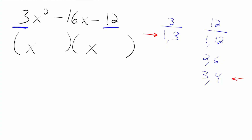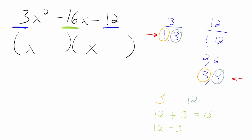The next phase is pretty simple — we're just going to multiply the two numbers on the left: 1 times 3 is 3. Then we multiply the two numbers on the right: 3 times 4 gets us 12. Next we're going to add and subtract these numbers to figure out which one gets us the middle number of the original problem, in this case 16. So 12 plus 3 gets us 15 — not 16. And 12 minus 3 is equal to 9 — also not 16. So we keep going.